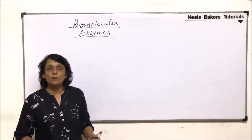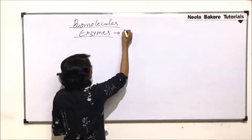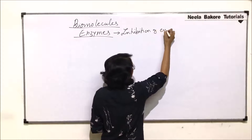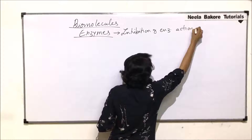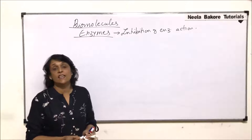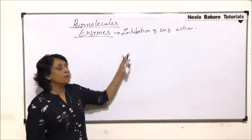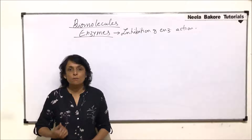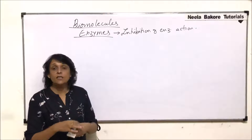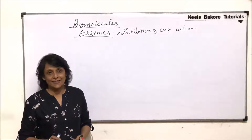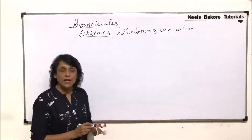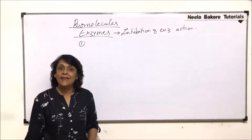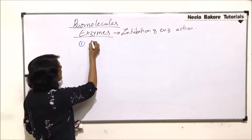In this section we will talk about inhibition of enzyme action. We can include these inhibitors or chemicals which inhibit enzyme action as a factor, along with substrate concentration, temperature, and pH. However, we normally talk about these inhibitors under a separate category, and that is why we are taking inhibition as a separate part. There are three ways in which enzyme action can get inhibited.